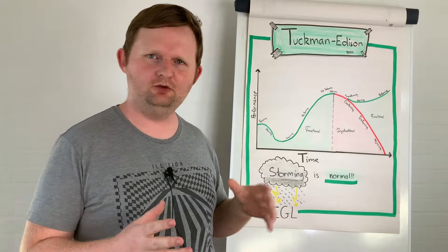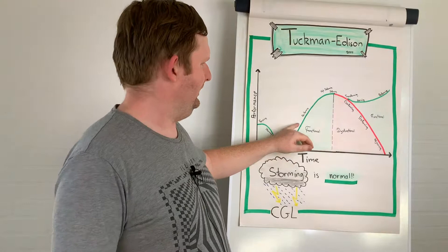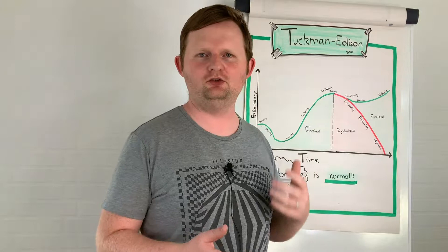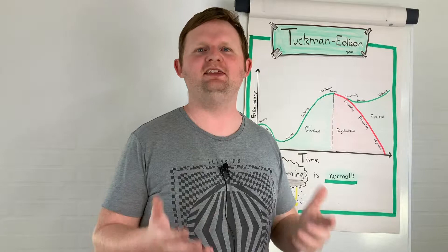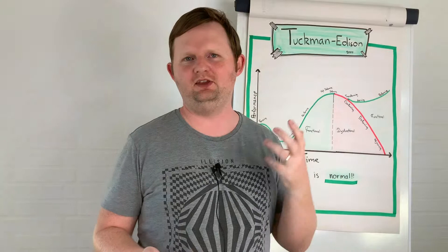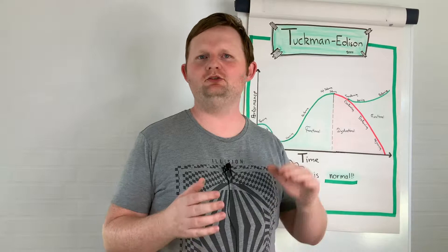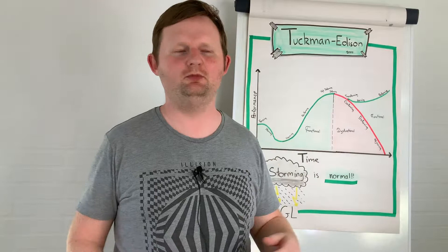But after the norming phase, some teams go into the performing phase — that is where we start to really perform. We are even more performant than before we were put together. People know each other, we can do stuff. And then we go into the high performing area. That is where we all strive to be — we are talking about high performance teams, how we should build the organization. But the question is: how do we keep a team as a high performance team?